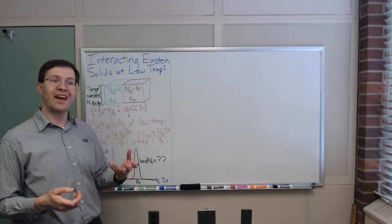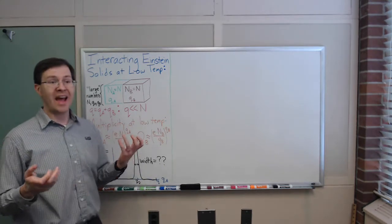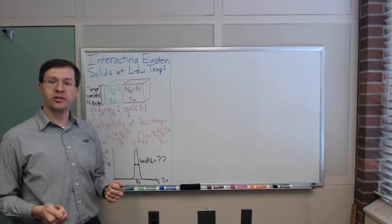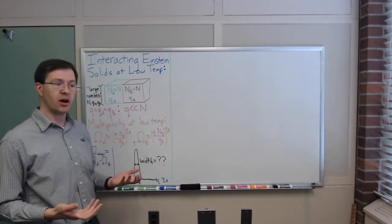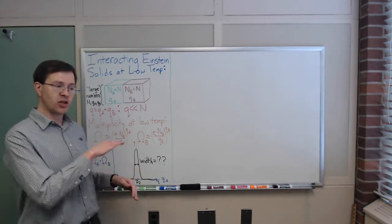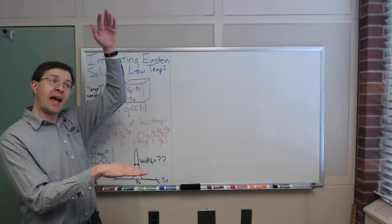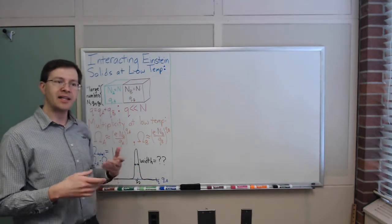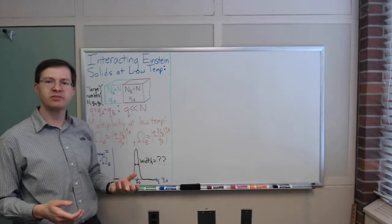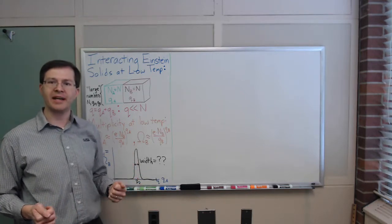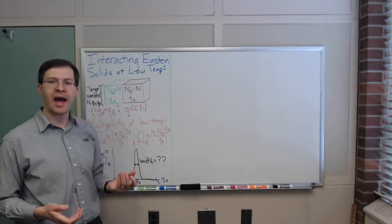We're going to study energy motion between two interacting Einstein solids. Energy in harmonic oscillators, as you know from quantum mechanics, comes in equal-size steps: a ground state and then one, two, three, n units above it, each step the same size. That's the beauty of this system as a simple model — we can just count how many energy units we have.